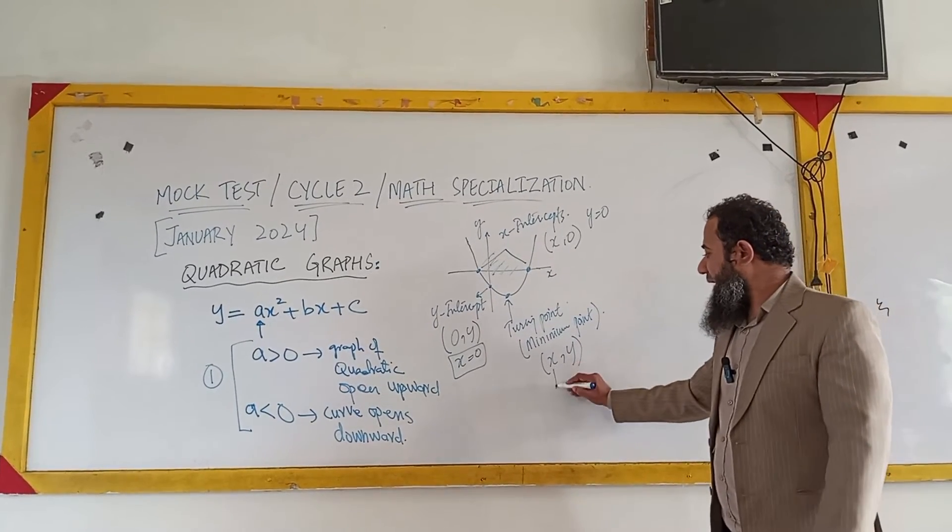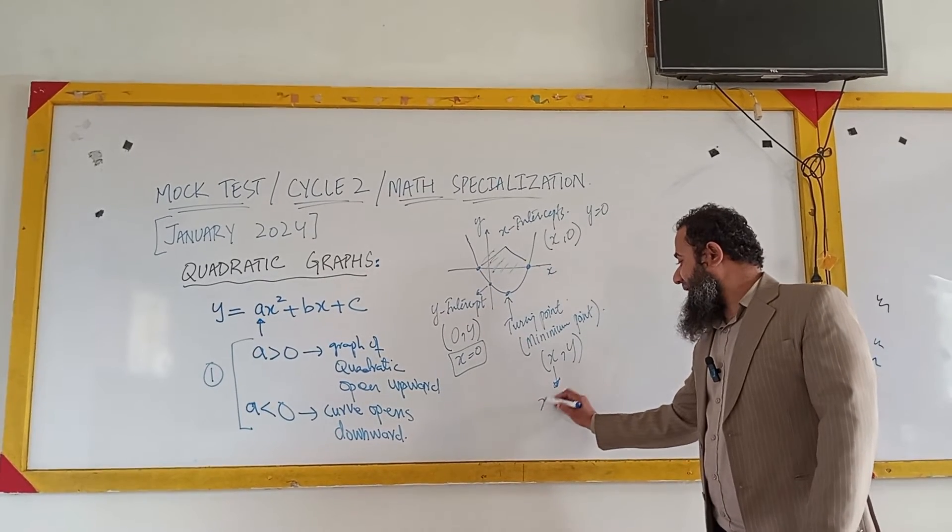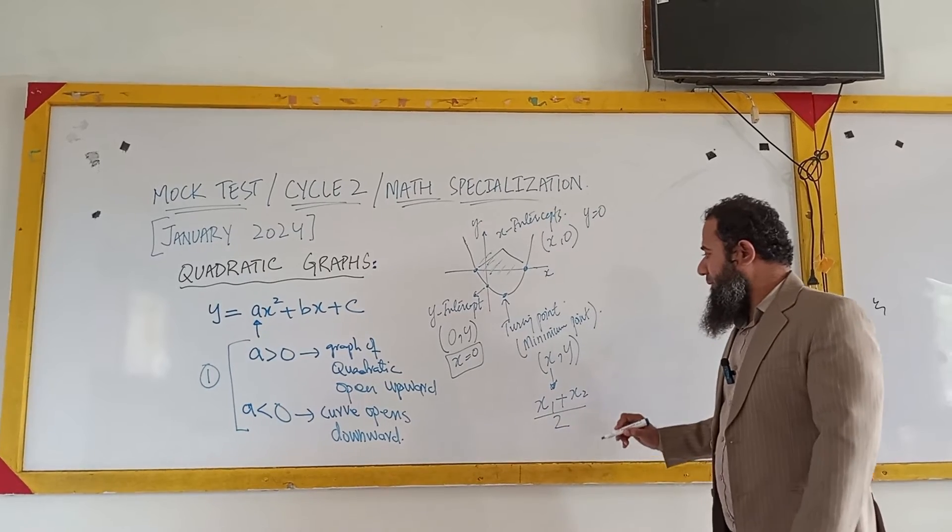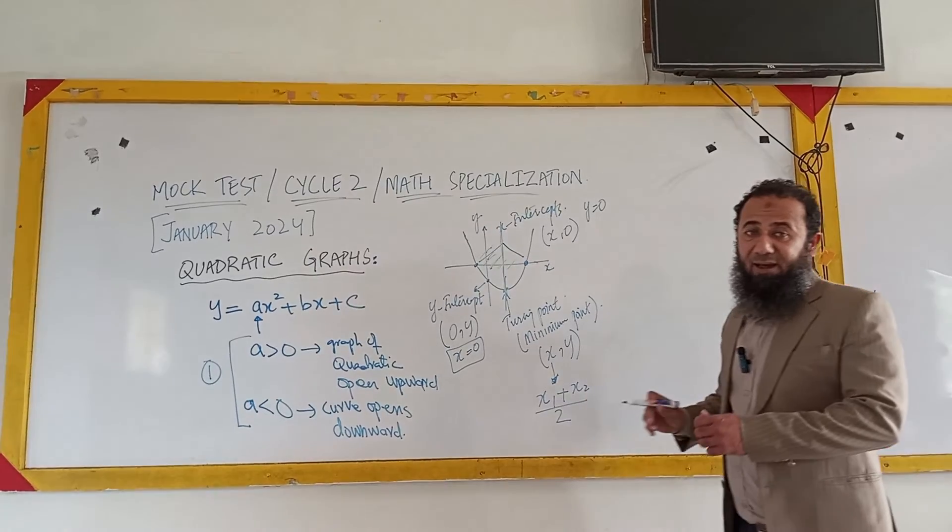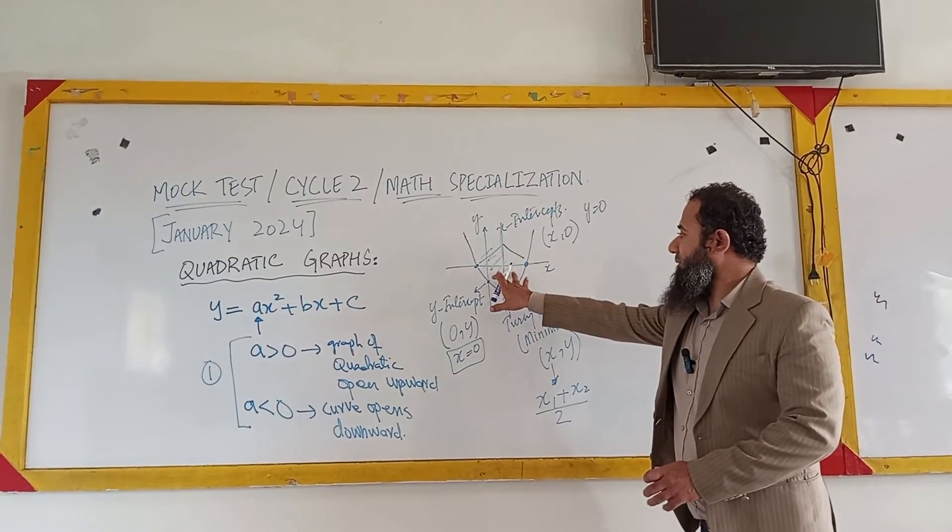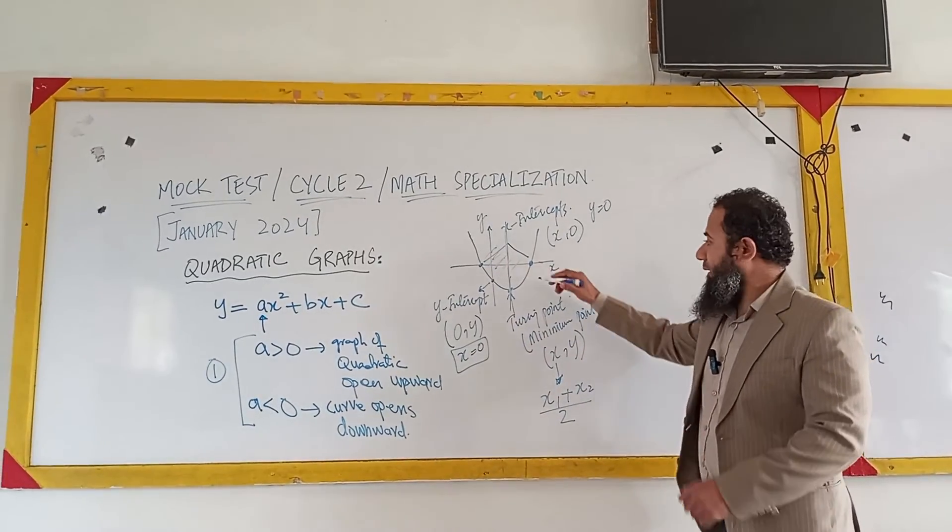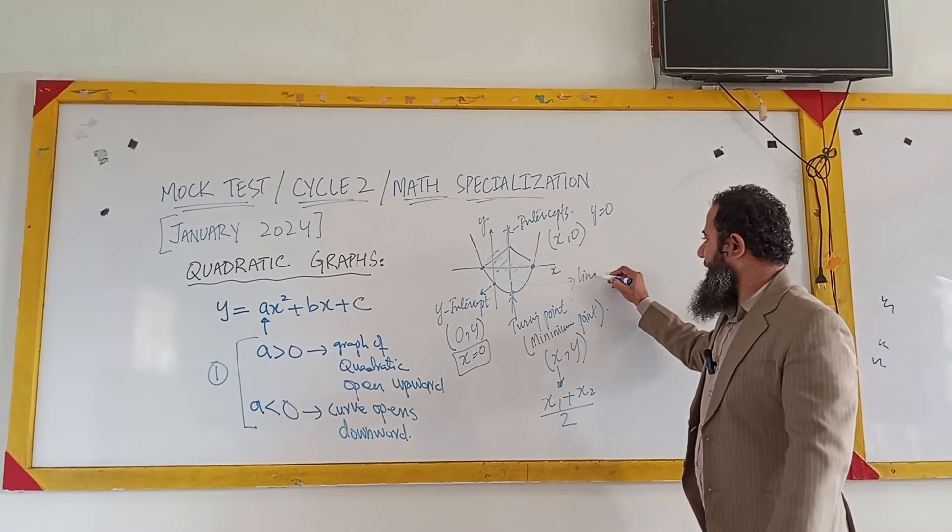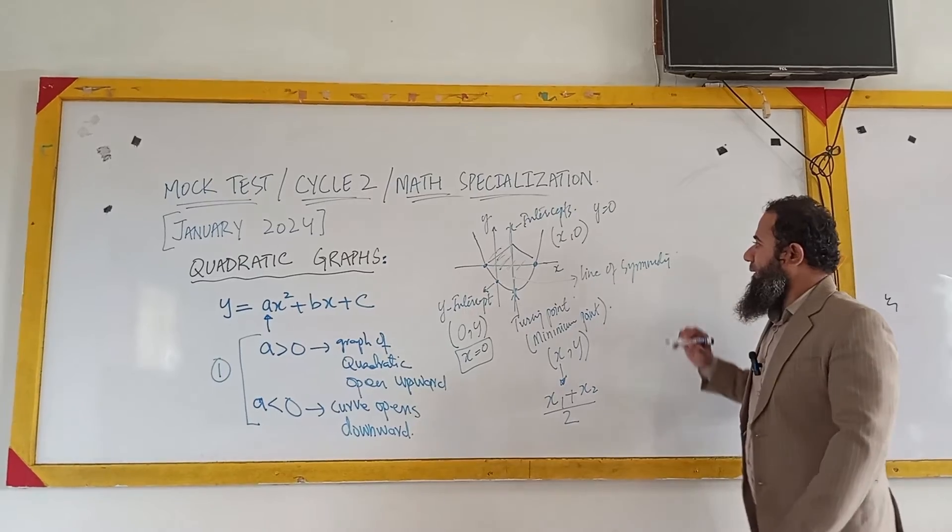To find out the value of x, you can easily use this formula: x1 plus x2 divided by 2, because this is the midpoint. Or you can say this point will divide our curve into two similar portions, and that's why we call this line a line of symmetry.